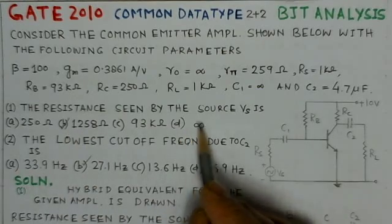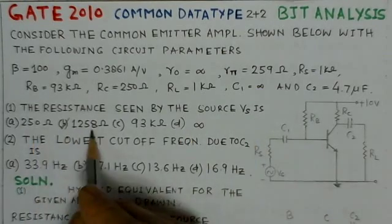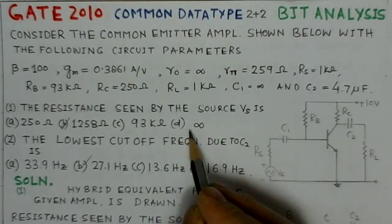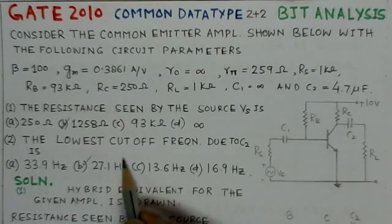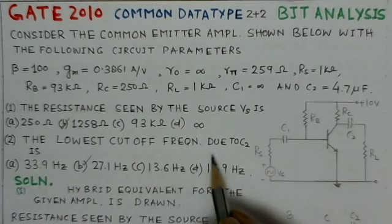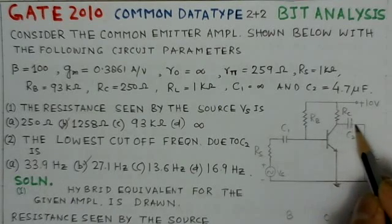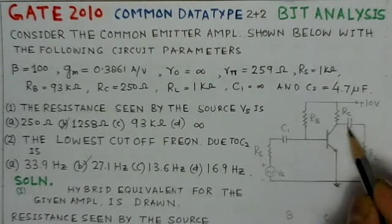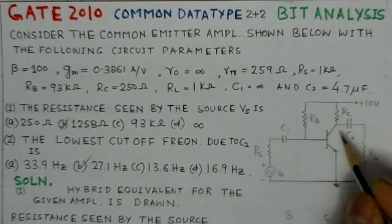The corresponding common emitter circuit is also drawn. First, we have to determine the resistance seen by the source vs — there are four options. Second, we have to find the lowest cutoff frequency due to the coupling capacitor c2. These are the two parts we have to solve.